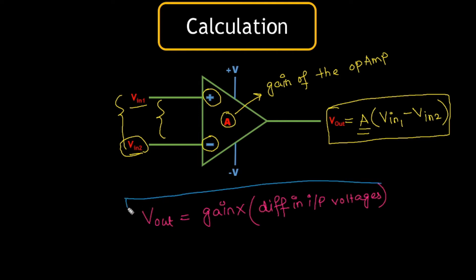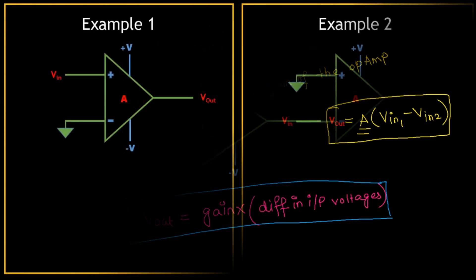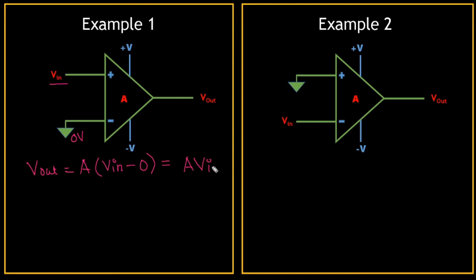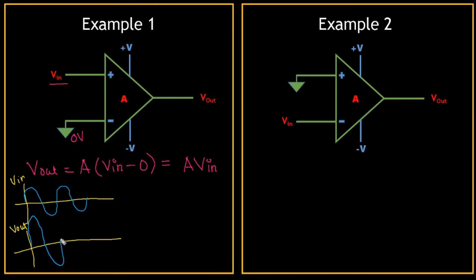This equation will be used throughout the course. For example, if the inverting terminal is grounded and the non-inverting terminal receives a voltage Vin, then Vout = A × (Vin − 0) = A × Vin. For a sinusoidal input signal, the output will be an amplified version of the same input signal.